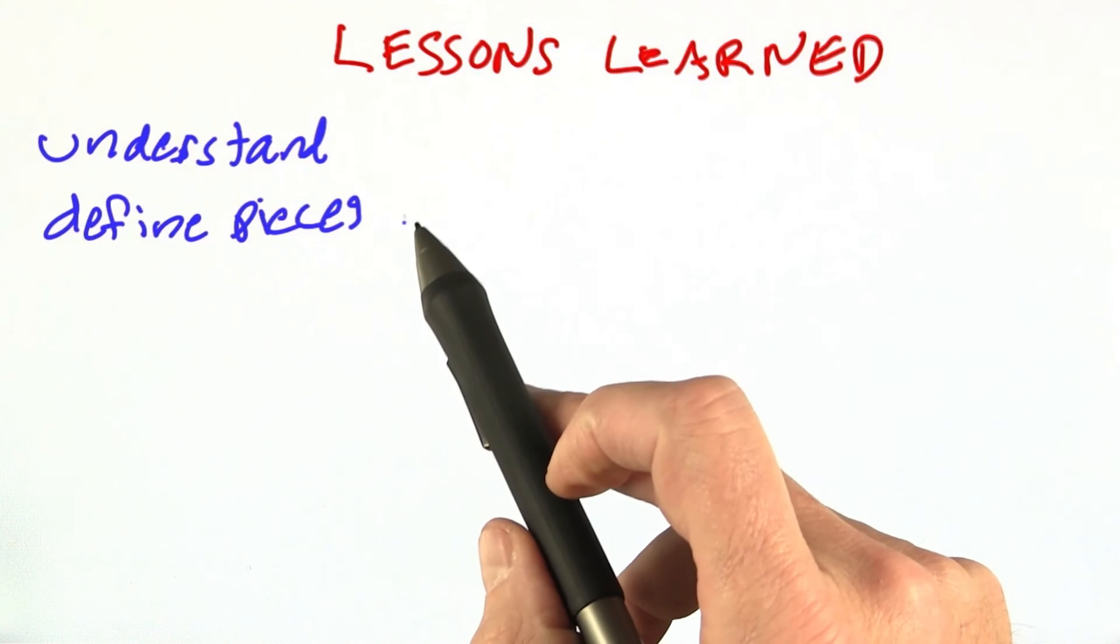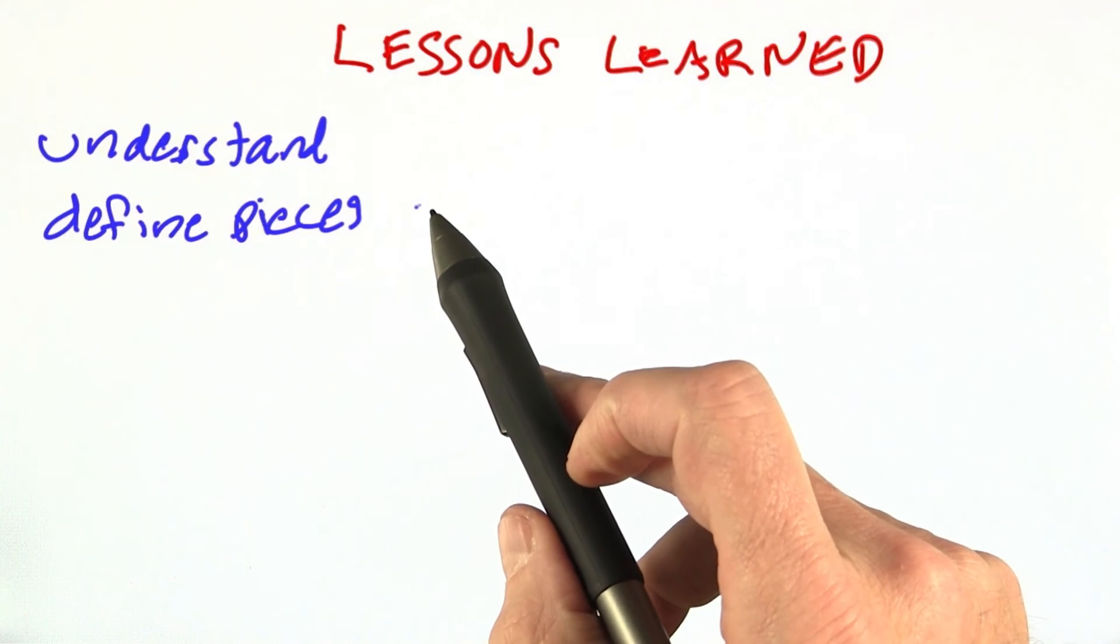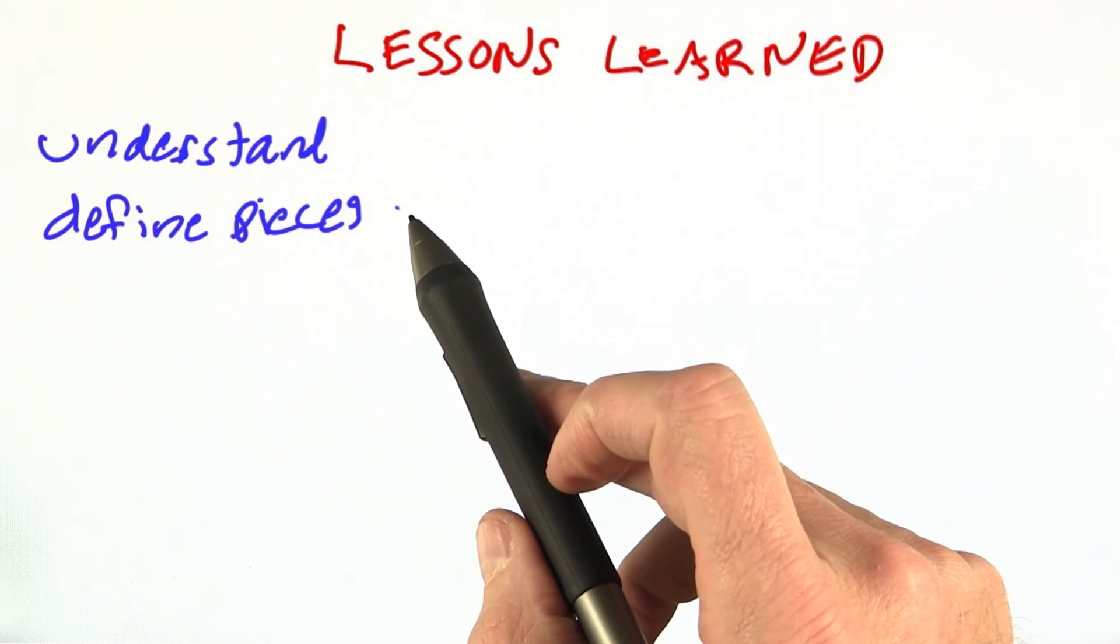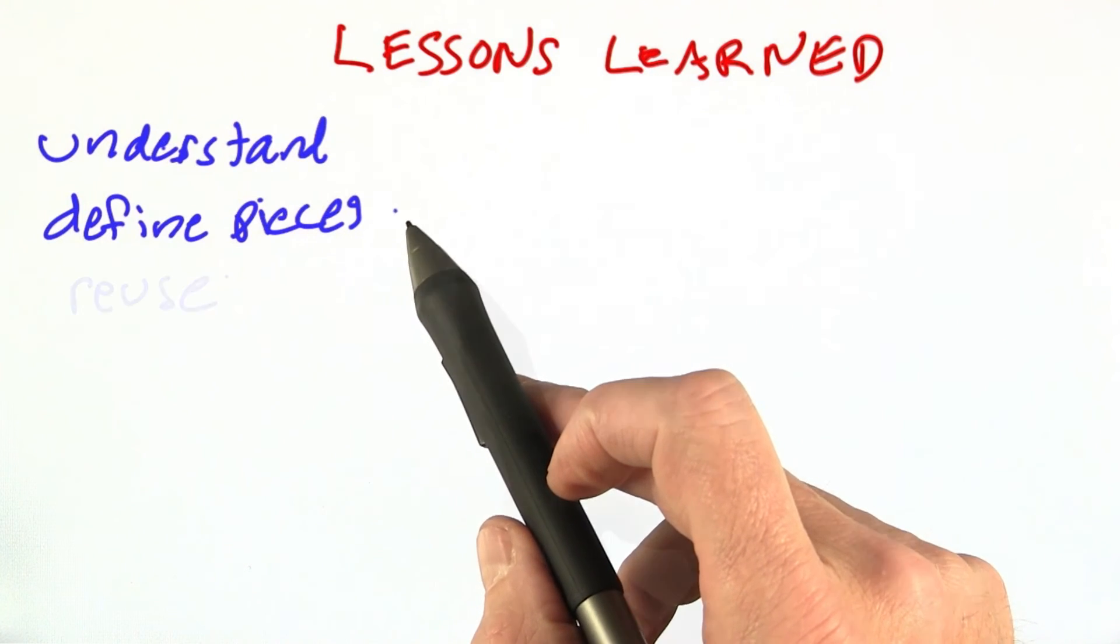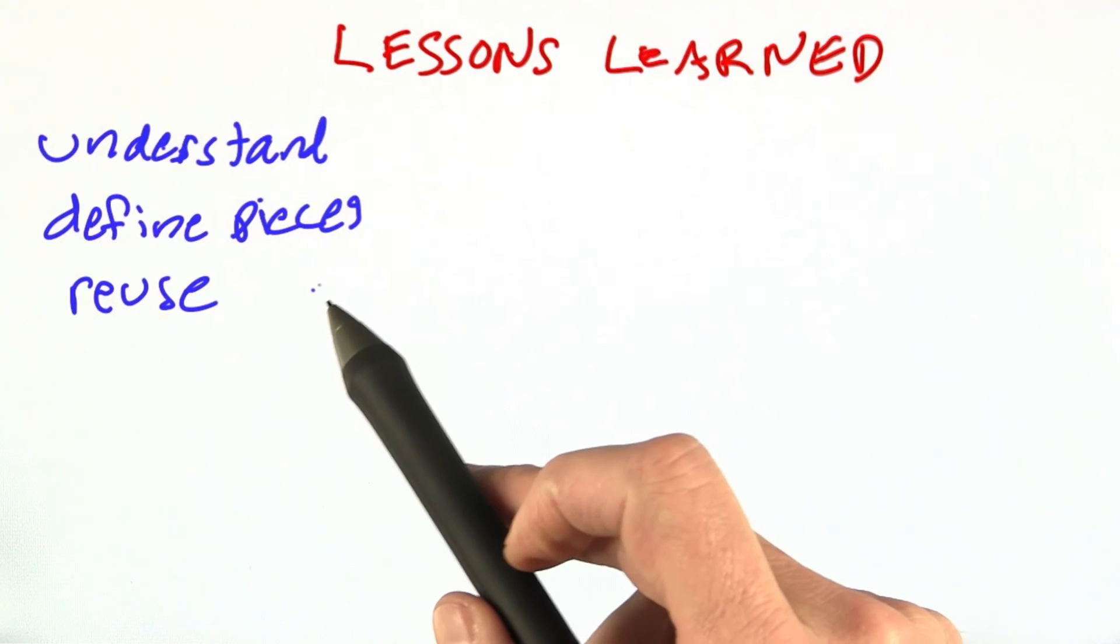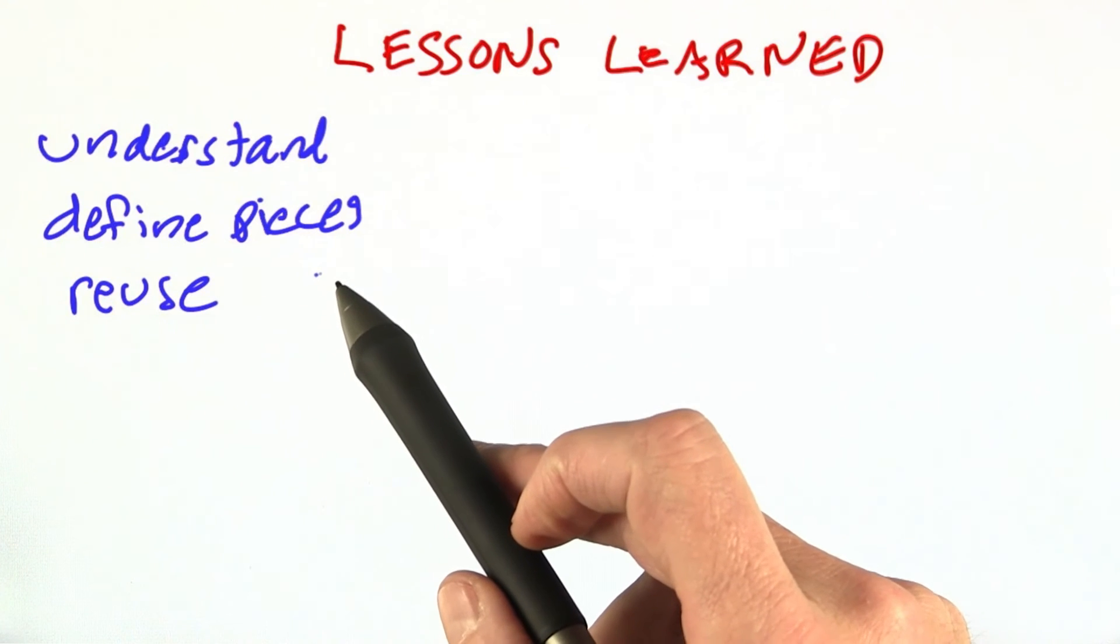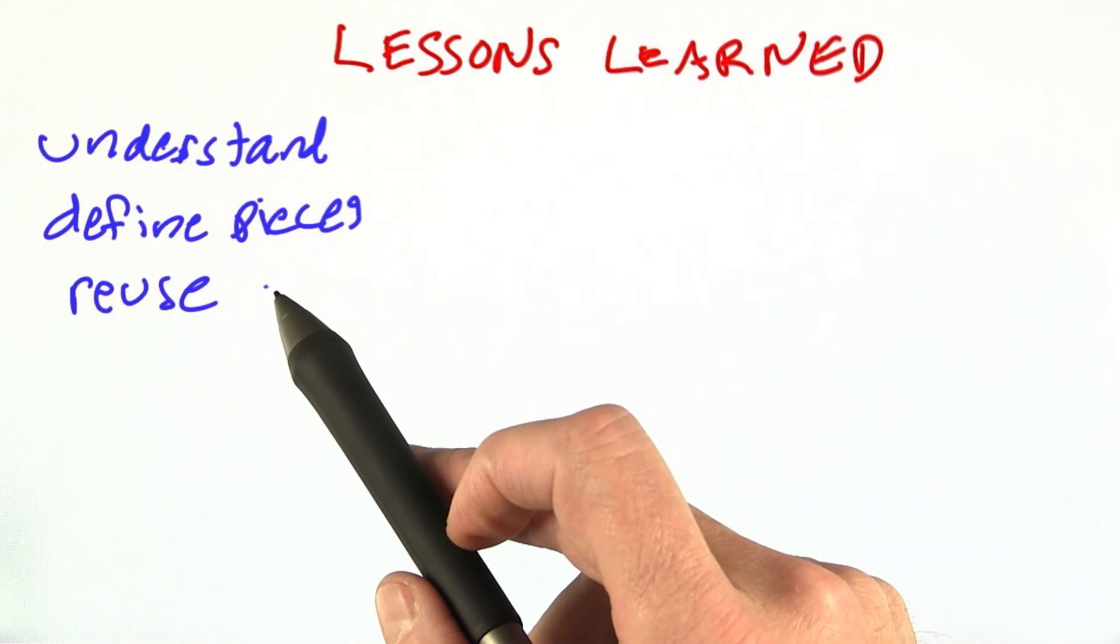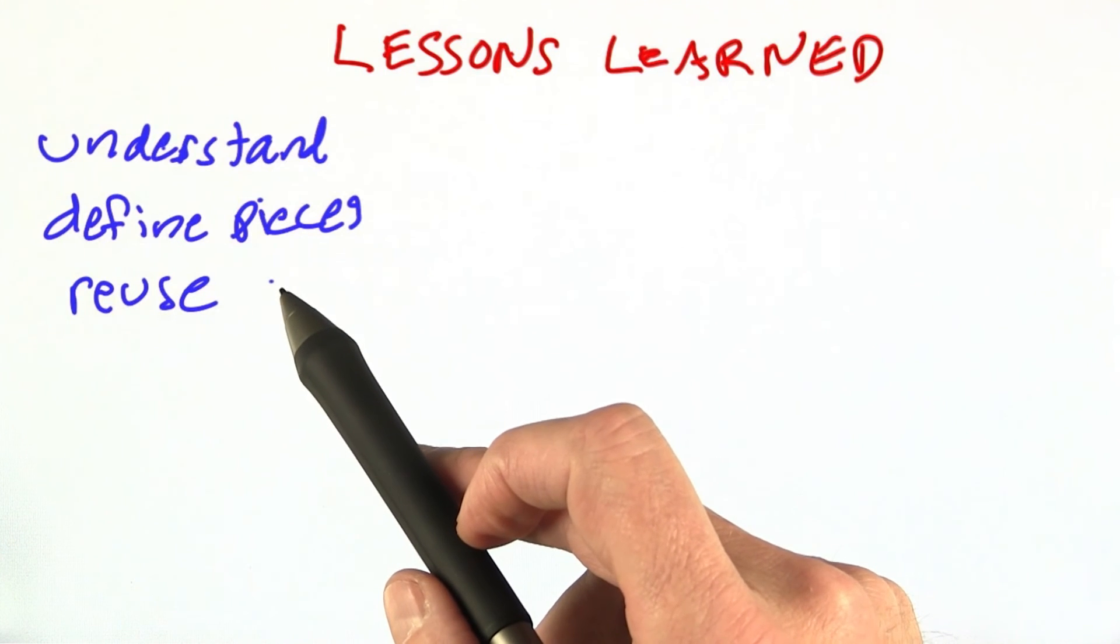Then define the pieces of the problem. For our problem we had cards and hands and ranks and suits and so on. Figure out everything there is to represent in the problem. As much as you can, try to reuse the pieces that you have. We used the max function, we used the random shuffle function. Those were sort of standard pieces that we already knew about.